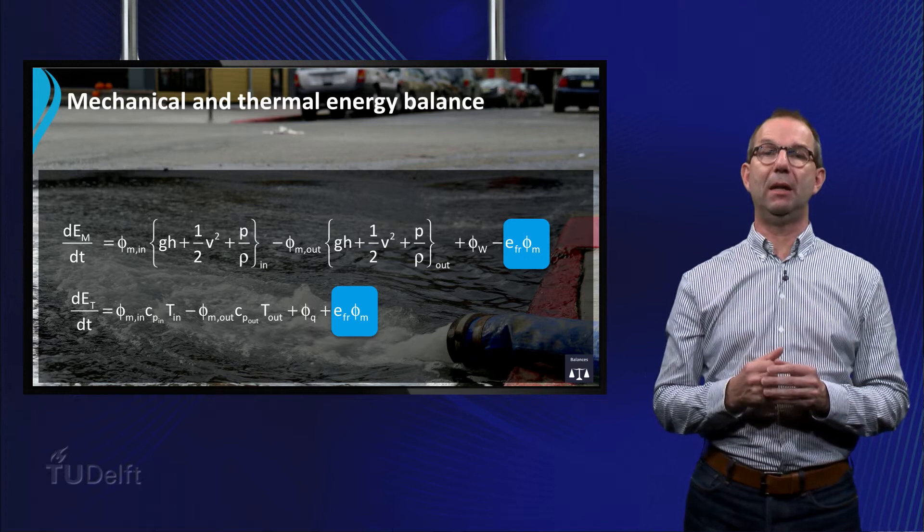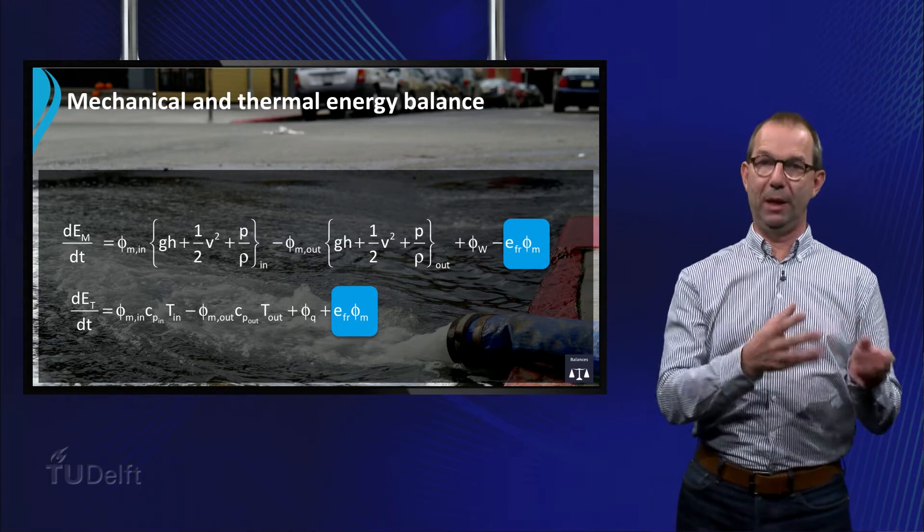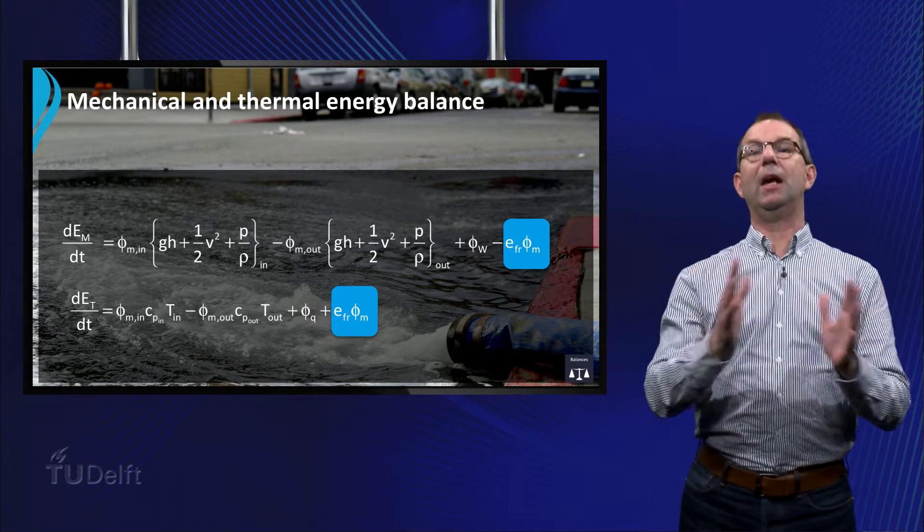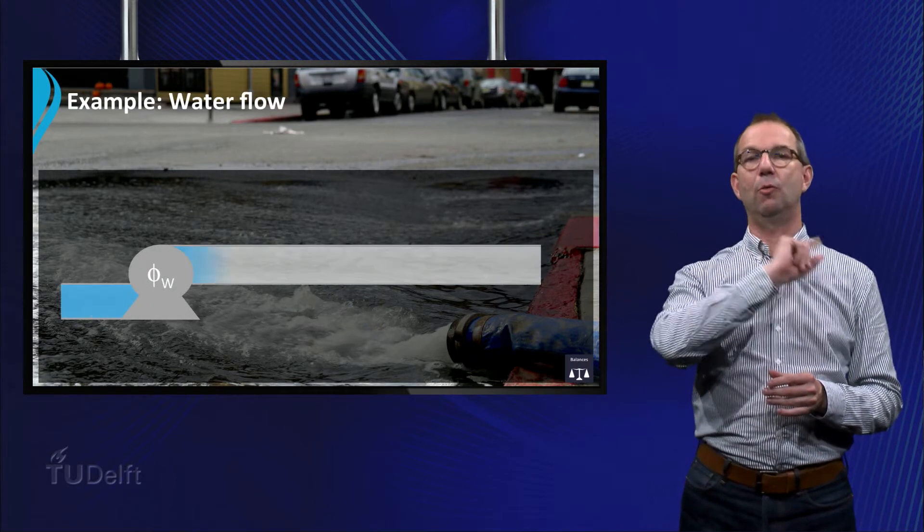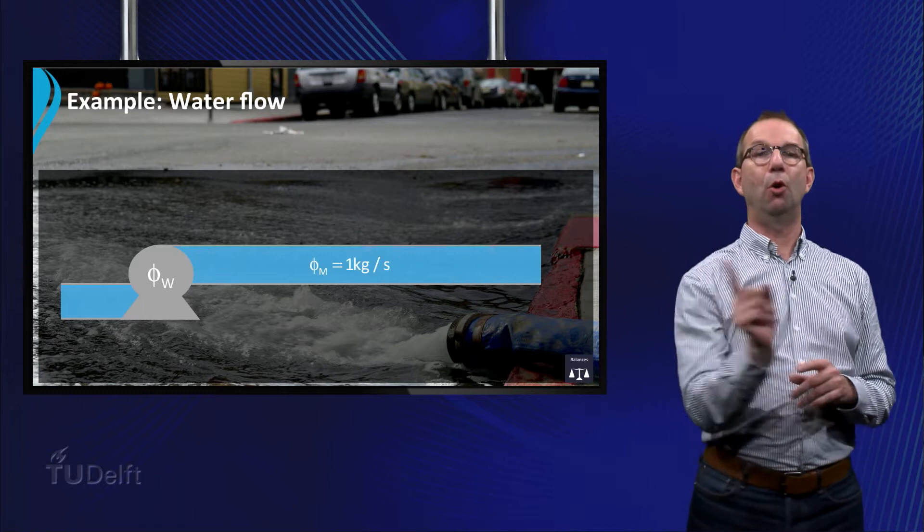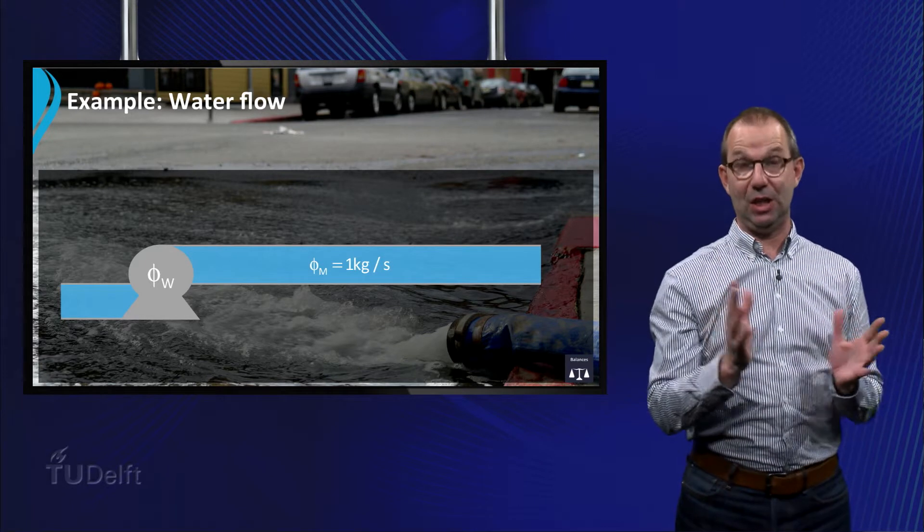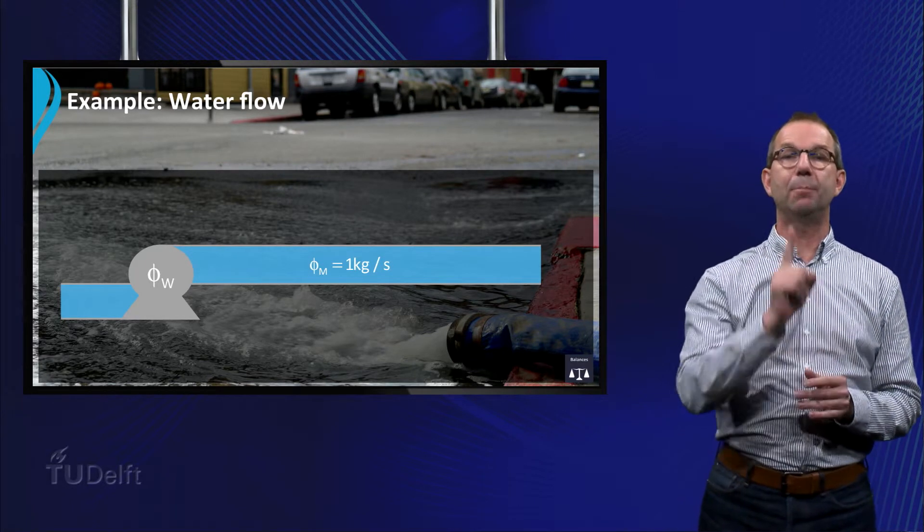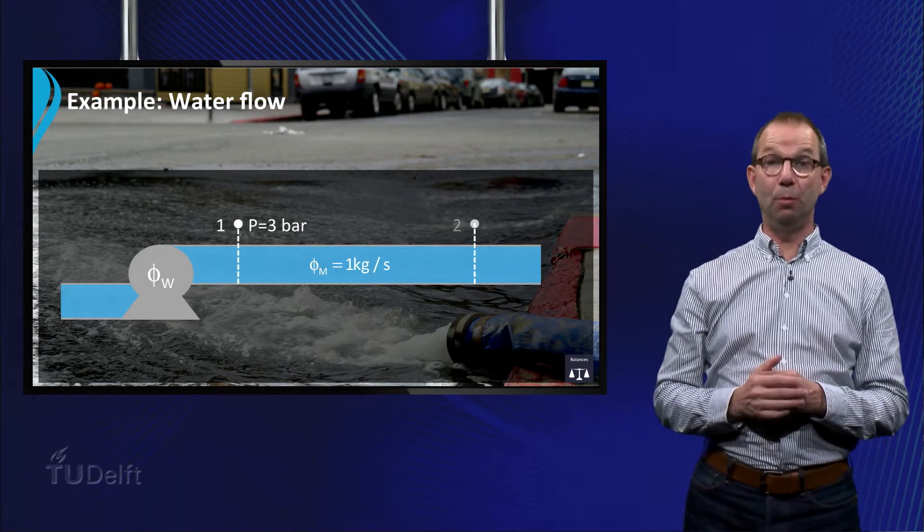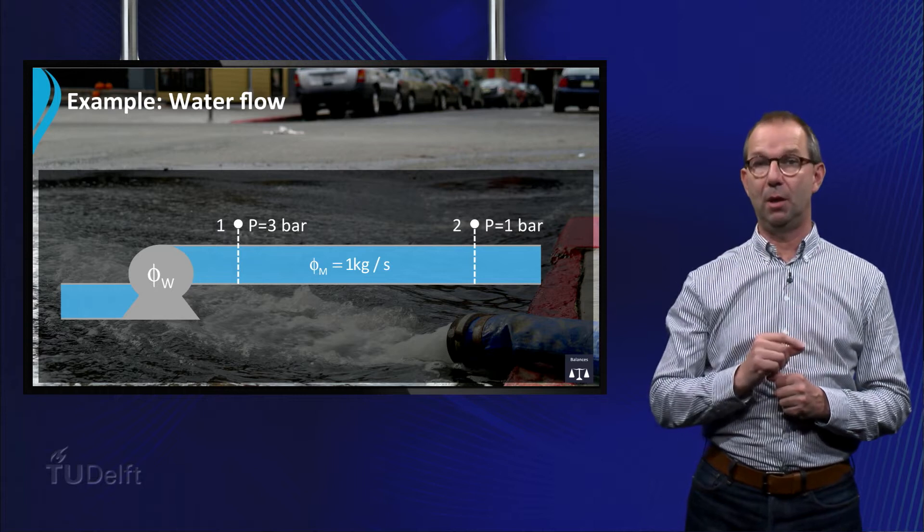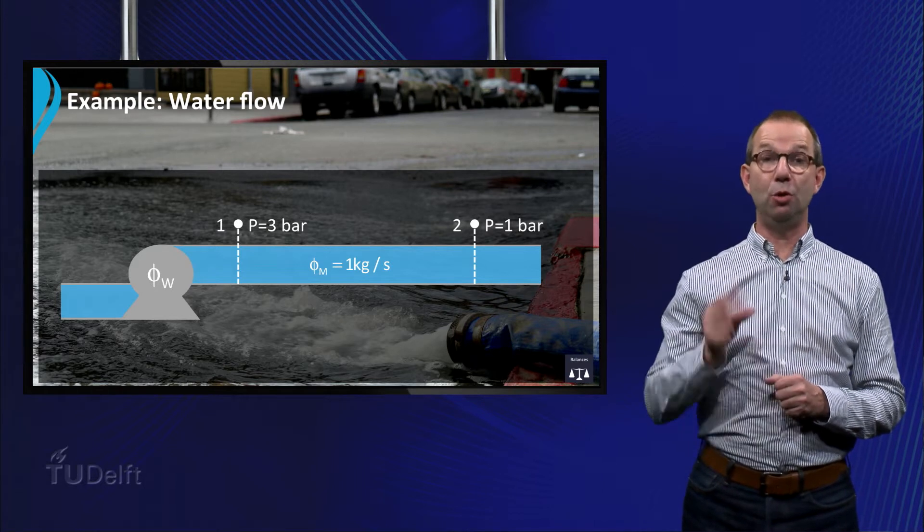To get a feeling how much mechanical energy is converted into thermal energy, we could take the following example. Let us consider the flow of 1 kg of water per second through a horizontal pipe under steady state conditions. At point 1 the pressure is 3 bars. At point 2 in the tube the pressure is 1 bar. We will now pose two questions.